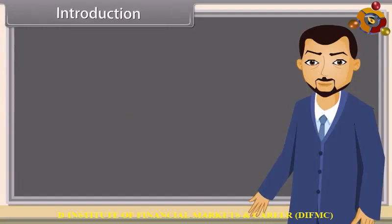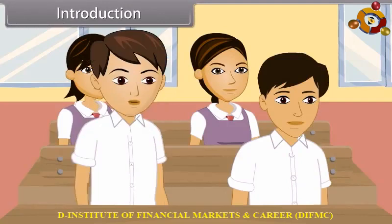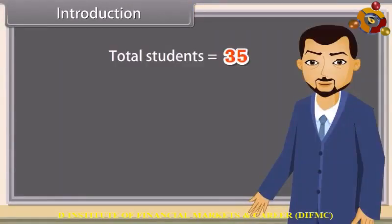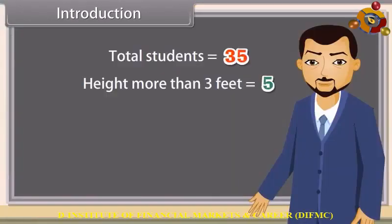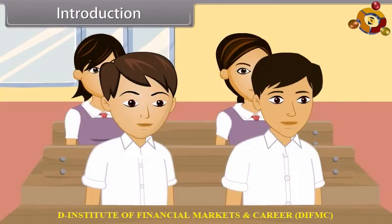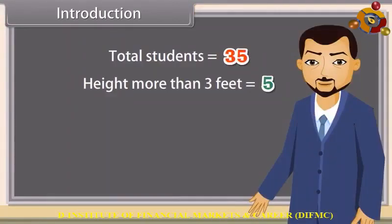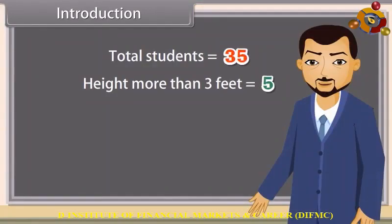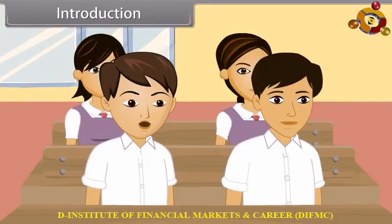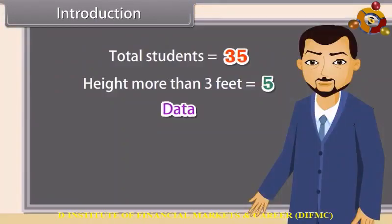How many students are there in the class? Thirty-five. How many students have height more than three feet? There are five students. And how many girls are here? Oh, there are many girls. Do you know why I am asking these questions? No. I'm taking data of your class. Data? Yes! And today I will explain everything about data. Come, let's start.